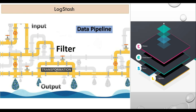Let me give you a brief about Logstash. Logstash is like a data pipeline. In layman's terms, we are getting input, processing that input in the filter, and transforming data into an understandable output format. Here our output is Elasticsearch, so we are transforming data into Elasticsearch's understandable format and saving it into the output.